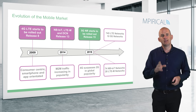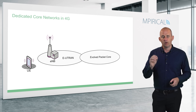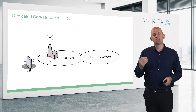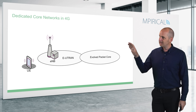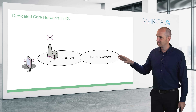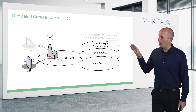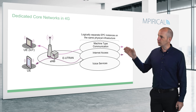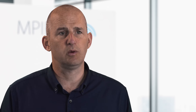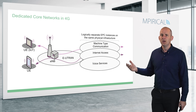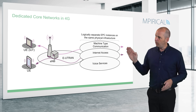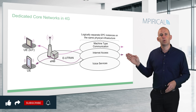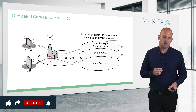Dedicated Core Networks are a 4G technology and sometimes there's a comparison to network slicing, but it's not a like-for-like comparison. In basic terms, here's our LTE architecture: Dedicated Core Networks operate on the core only. We can create several virtual EPCs for potentially different traffic groups or customer groups — for example MTC, internet access, and voice. They're all logically separate instances of the Evolved Packet Core but on the same physical infrastructure. The key point is this is not end-to-end — it's core-centric — whereas 5G network slicing is end-to-end.